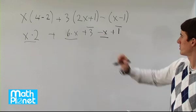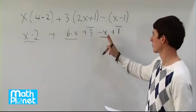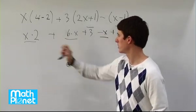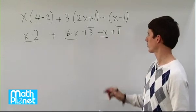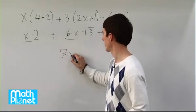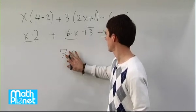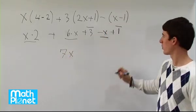So we have 2x's plus 6x's minus 1x. So 6 plus 2 is 8, 8 minus 1 gives us 7x. Then we have 3 plus 1, that's 4.